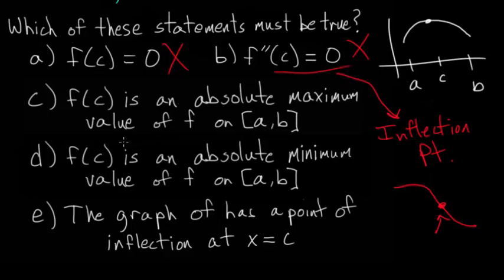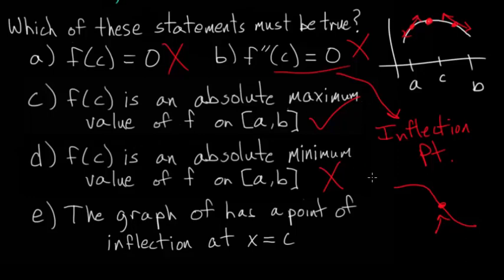Choice C states that f(c) is an absolute maximum on the interval. This is true: the derivative from a to c is positive so the function rises, and the derivative from c to b is negative so the function falls — confirming c is the absolute maximum. Choice D is not true since it can't be both a max and a min. Choice E is similar to B — there's no information given about an inflection point there. The final answer is C.